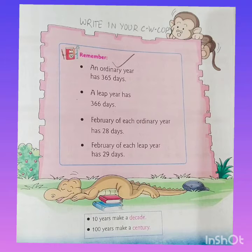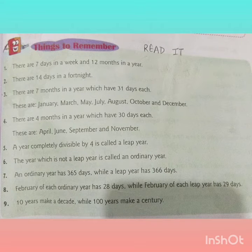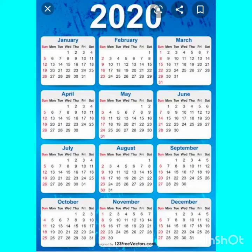Also note that 10 years make a decade and 100 years make a century. You should also read the things to remember on page 237 in your book. Now you can see the calendar of 2020. A calendar is the record of all the dates of a particular year. It shows the months, weeks and days in the year.